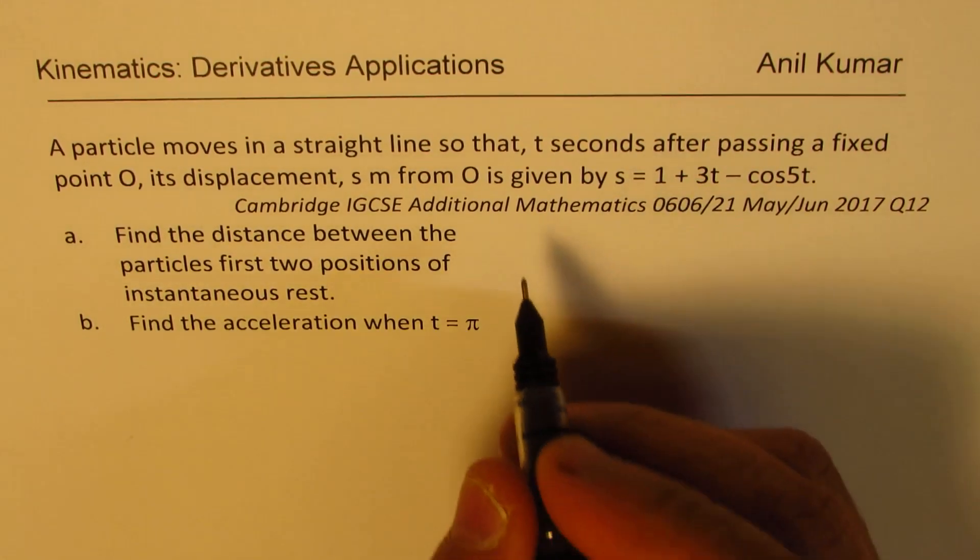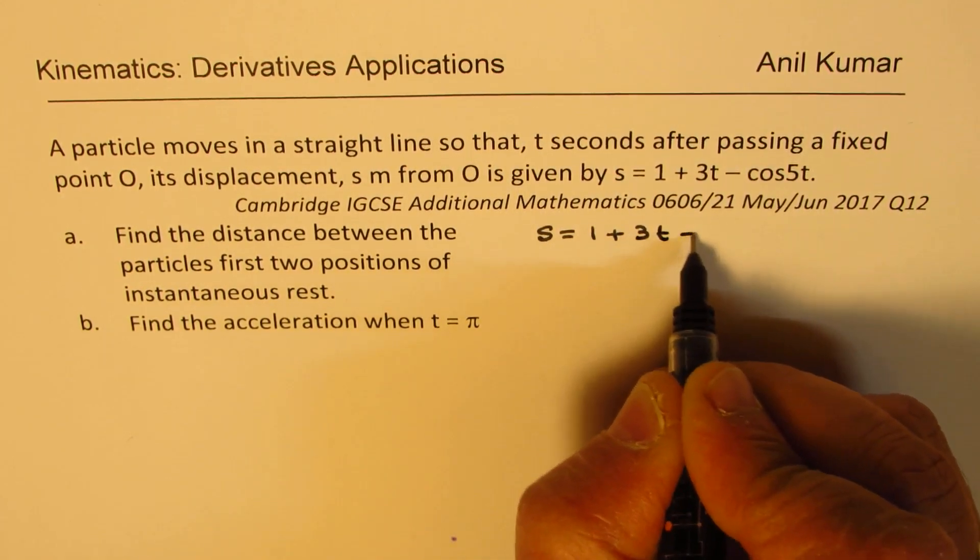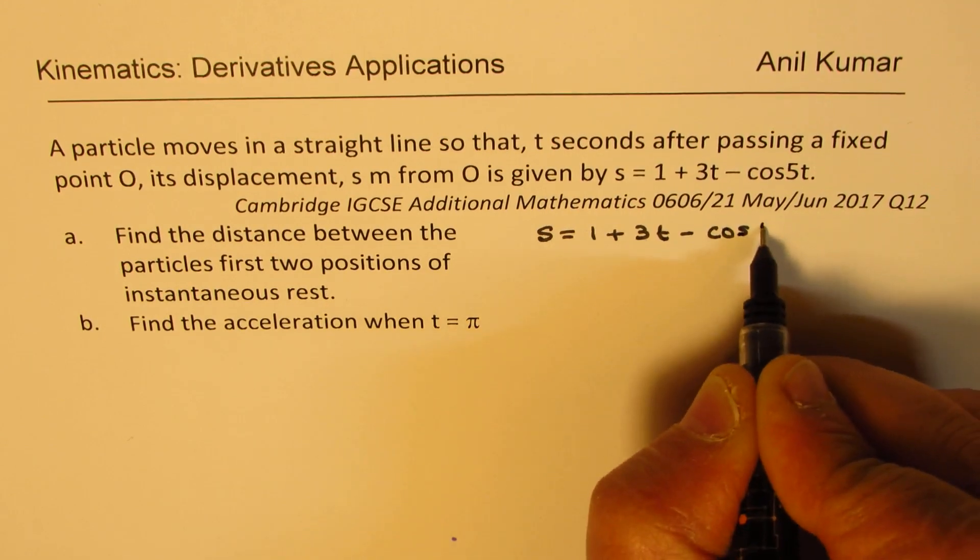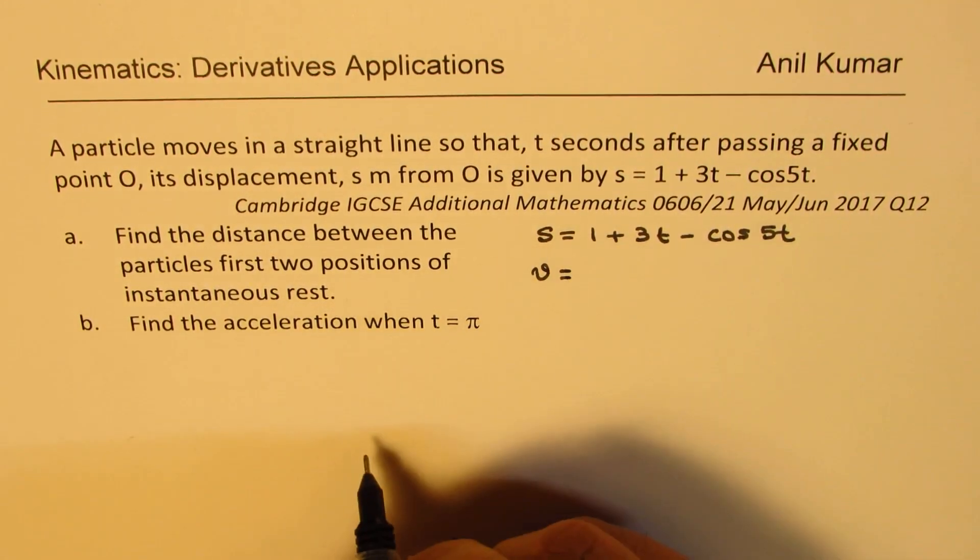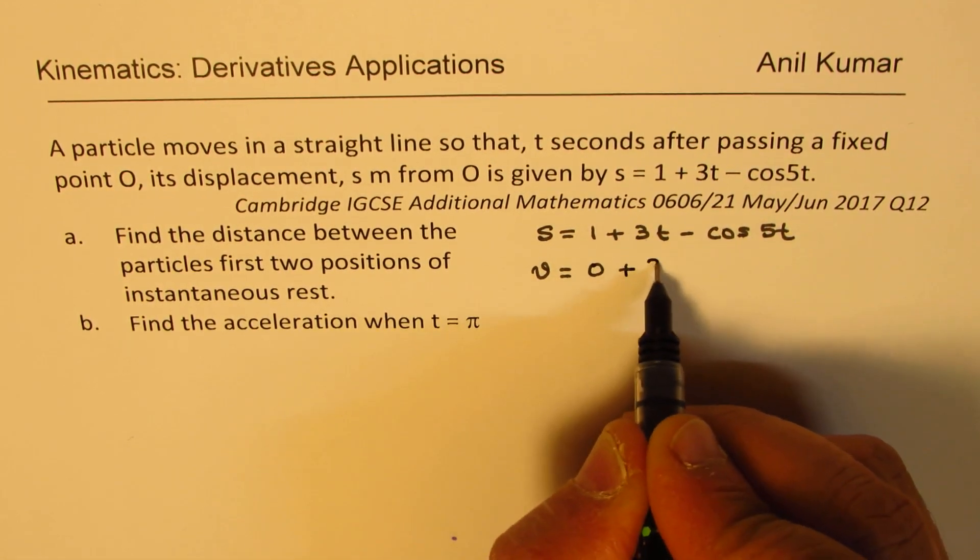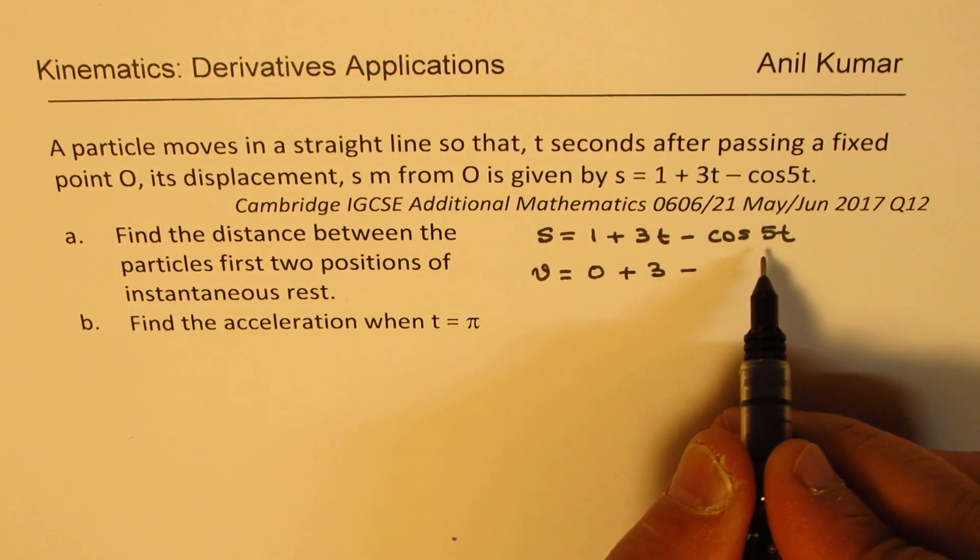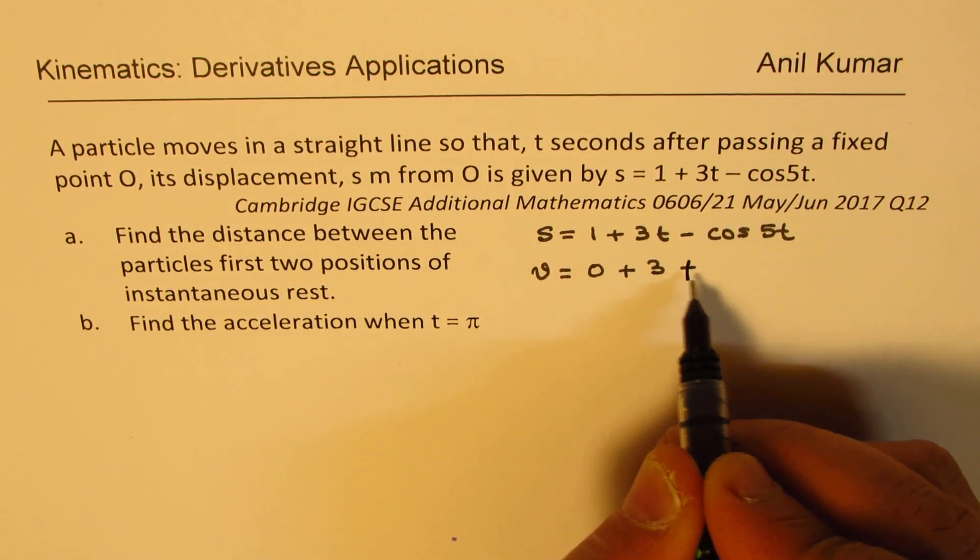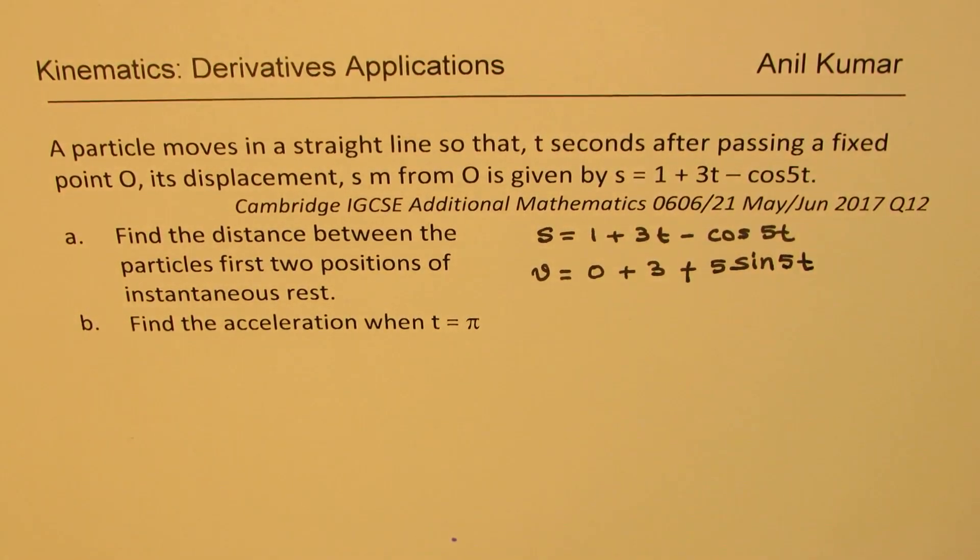We are given that s equals 1 plus 3t minus cos 5t. Let's find the velocity which is derivative of s. That would be 0 plus 3 minus, derivative of cos 5t will be minus, so it becomes positive 5 sine 5t. That's the derivative.